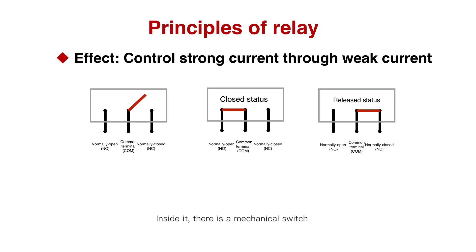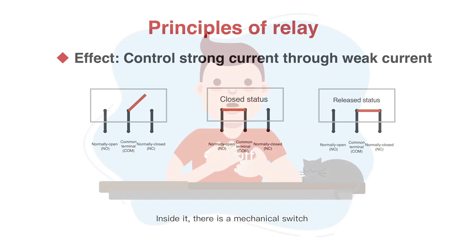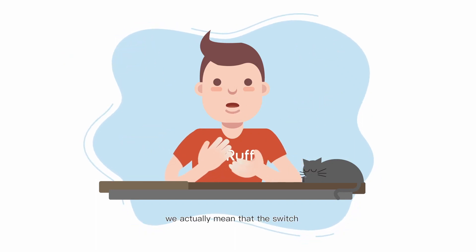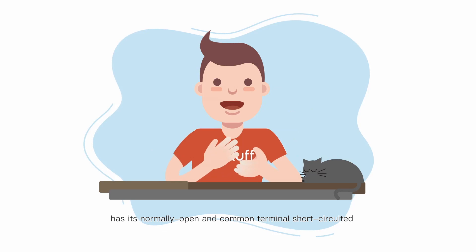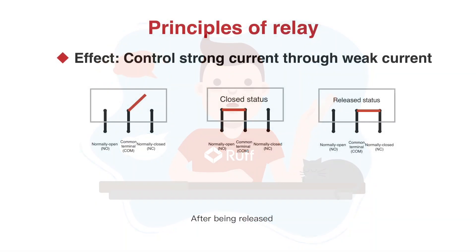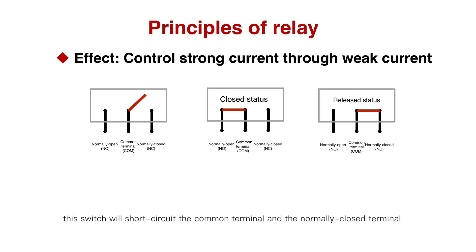Inside it, there is a mechanical switch. When we say the relay is in a closed status, we actually mean that the switch has its normally open and common terminal short-circuited. After being released, this switch will short-circuit the common terminal and the normally closed terminal.